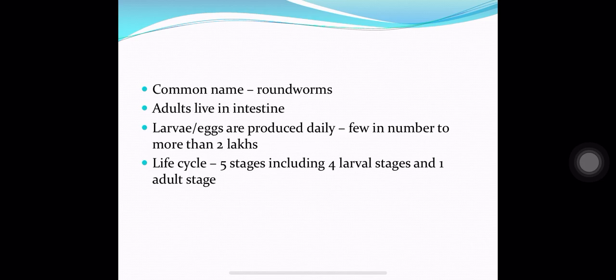The common name of intestinal nematodes is roundworm. The adults live in the intestine and larvae or eggs are produced daily — ranging from several to more than 200,000 per day. The life cycle of intestinal nematodes has 5 stages, including 4 larval stages and 1 adult stage.